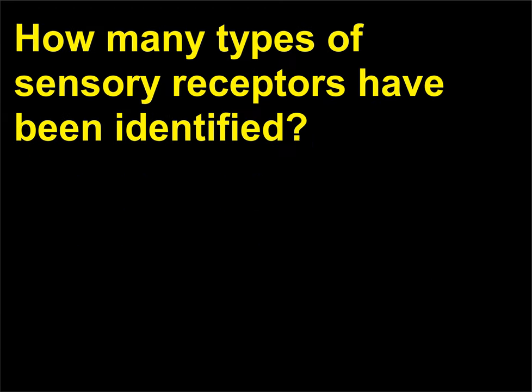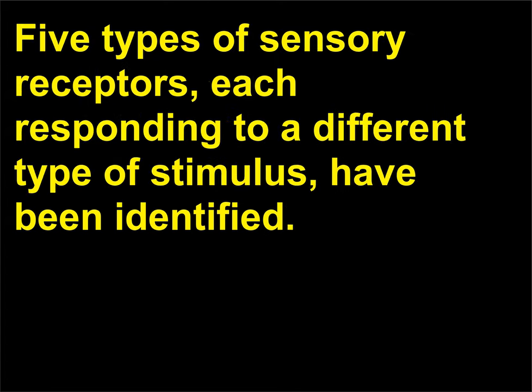How many types of sensory receptors have been identified? Five types of sensory receptors, each responding to a different type of stimulus, have been identified.